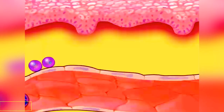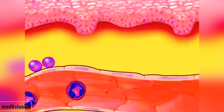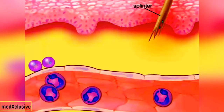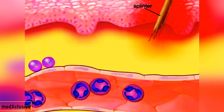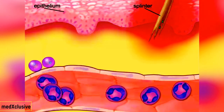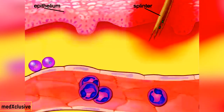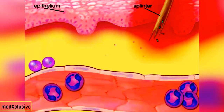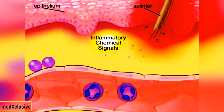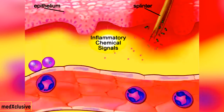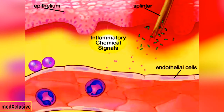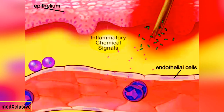The inflammatory response is an important non-specific defense against tissue damage. It begins when injured tissue cells release chemical signals that activate the endothelial cells of nearby capillaries.